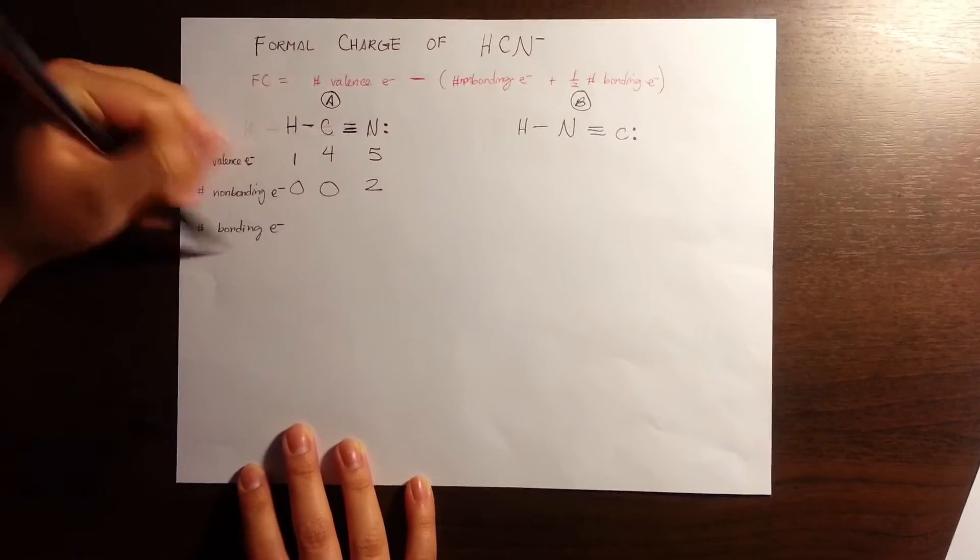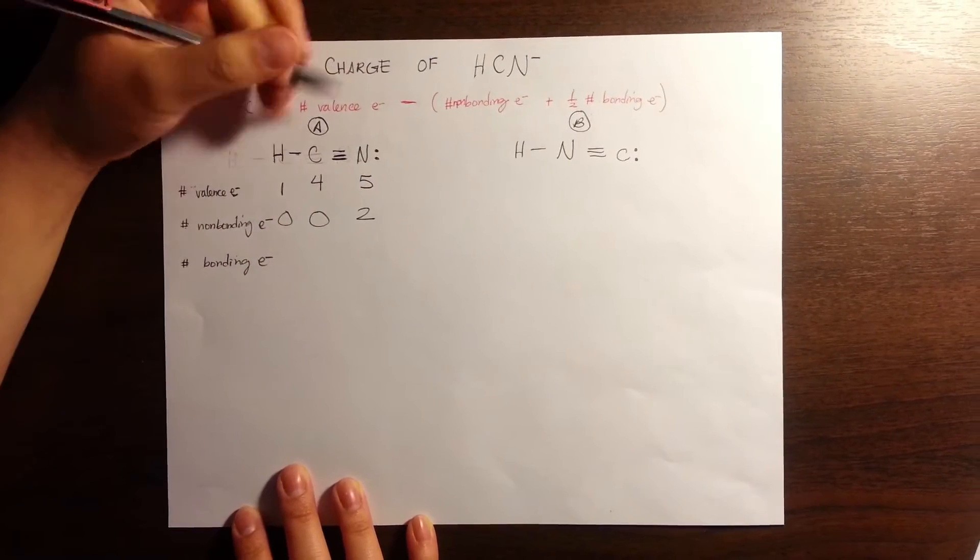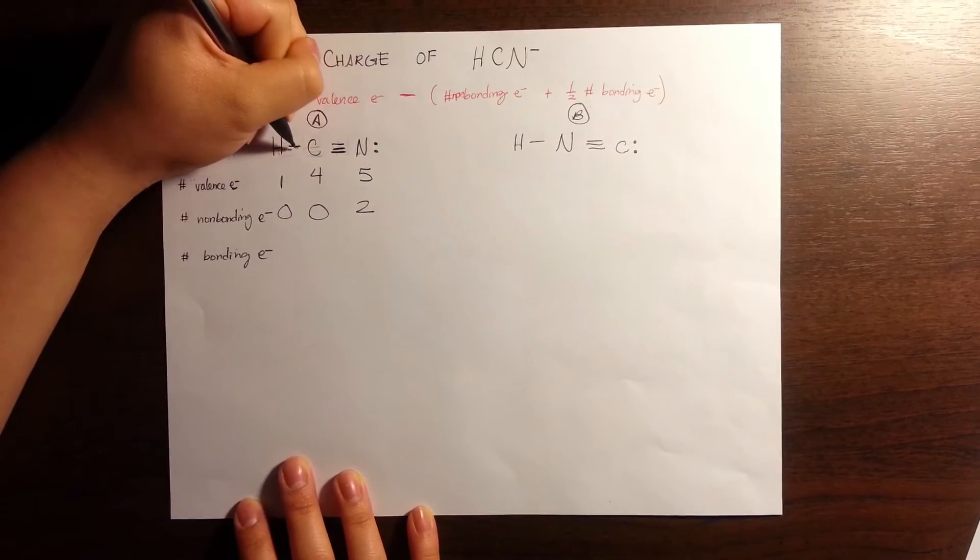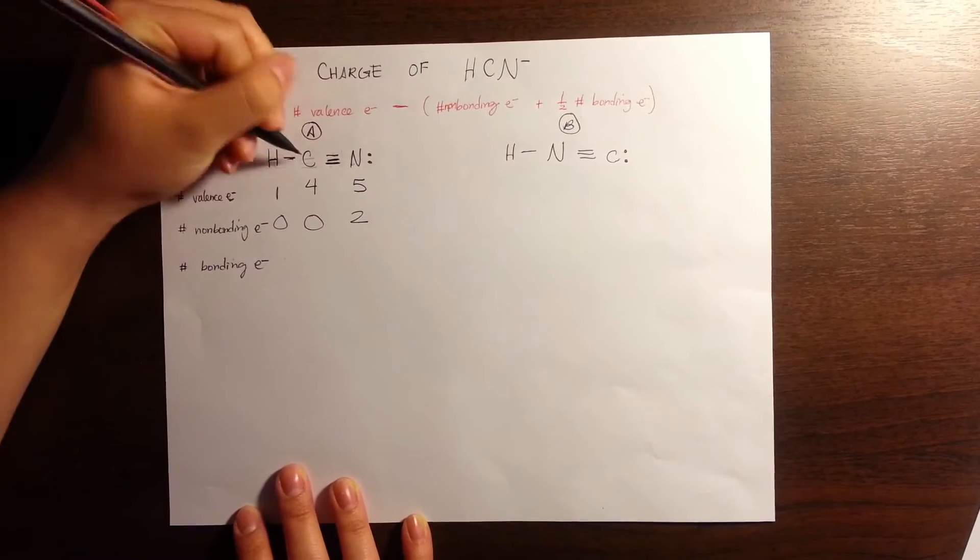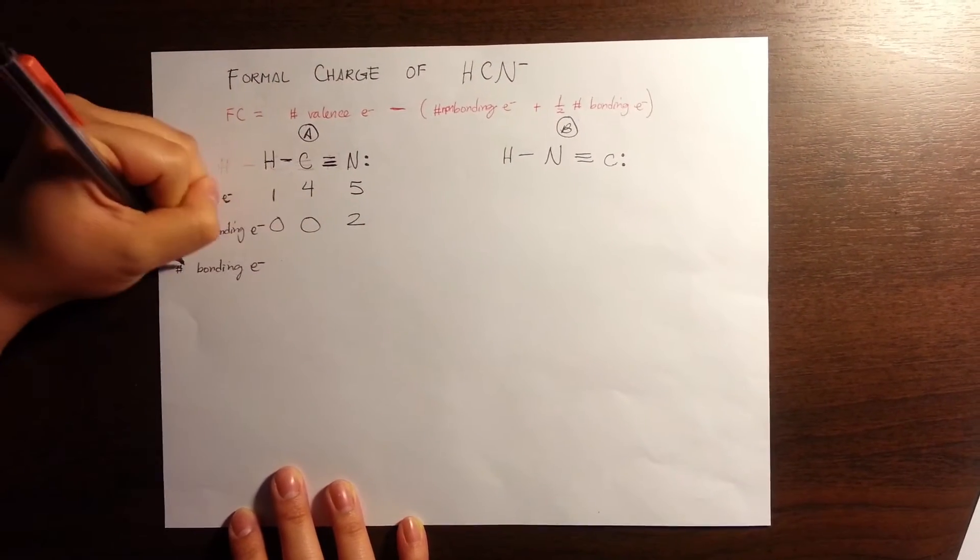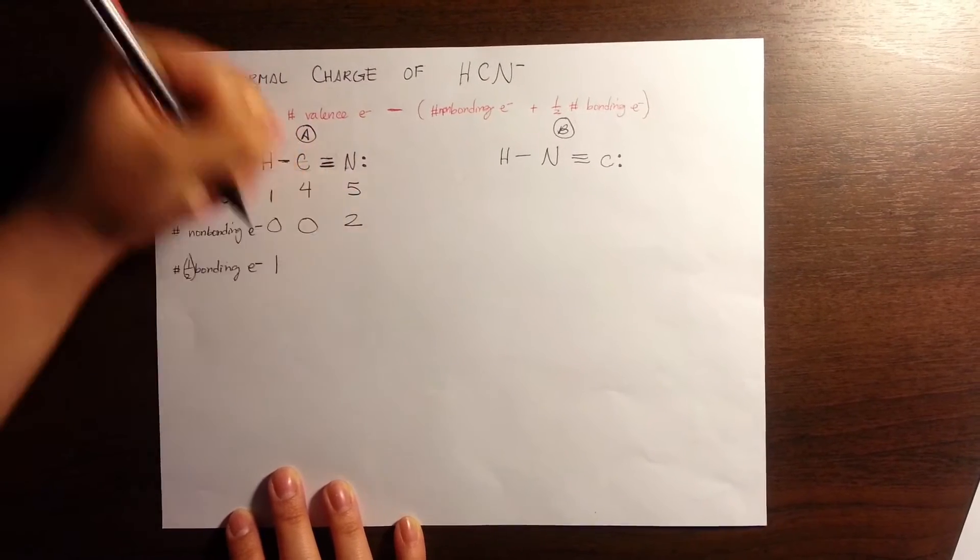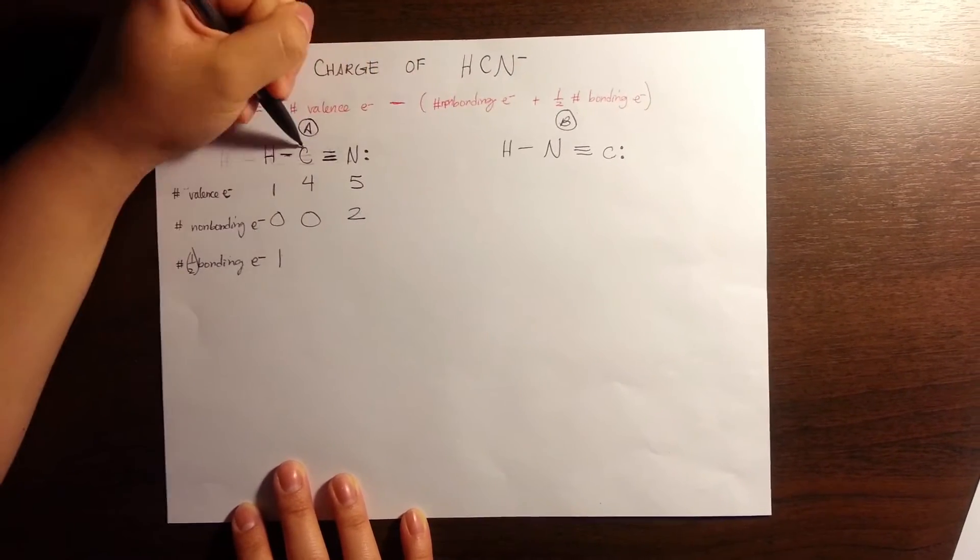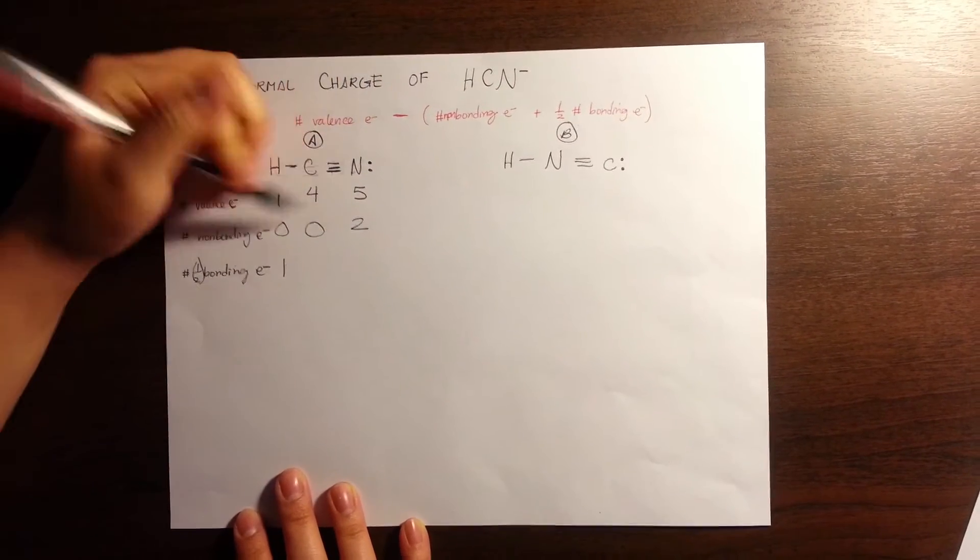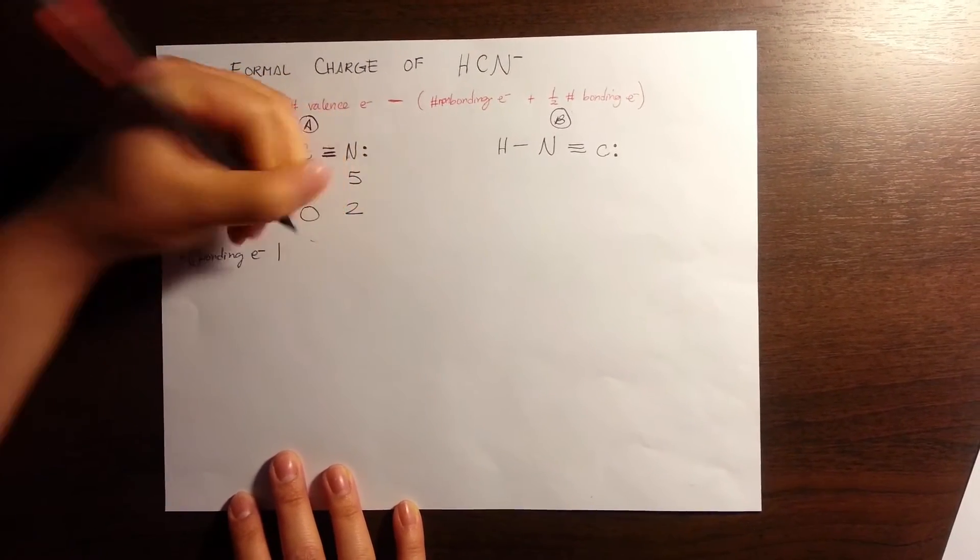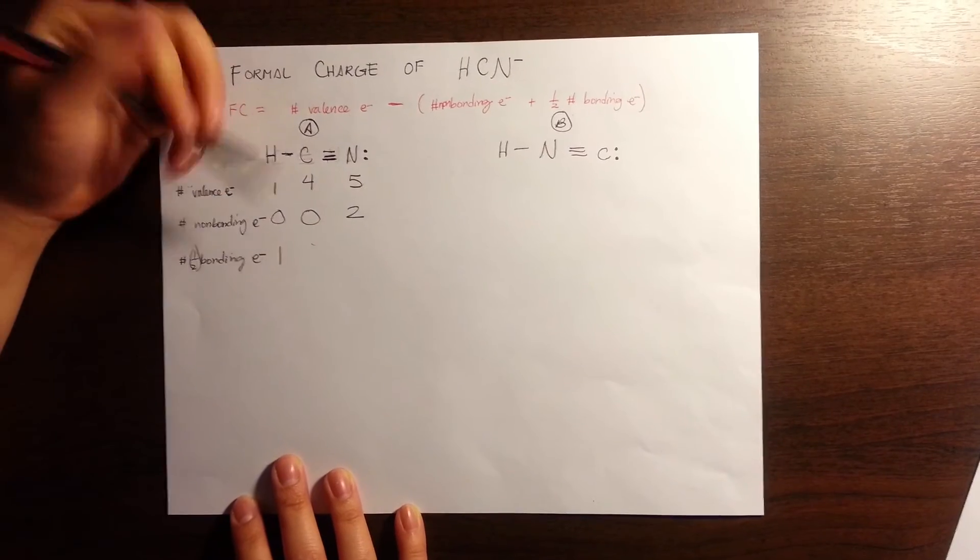Number of bonding electrons for hydrogen: we have two, but we're going to divide that in half, so we count that as one. And for carbon, we have four—one-half of the bonding electrons.